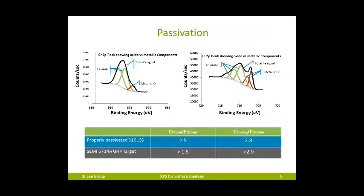The spectra in this slide can be processed by the XPS computer software to quantify these ratios of chrome, chrome oxide, iron, and iron oxides to determine whether they meet ASTM or semiconductor equipment processing specifications. In this example, the ratio of total chrome to iron and chromium oxide to iron oxide exceed the 1.5 and 2.0 ratios required for this ASTM documented process.